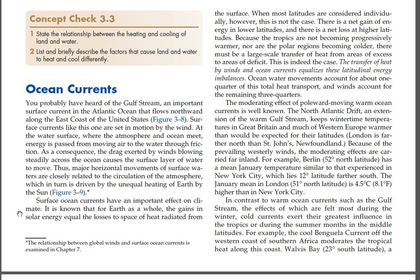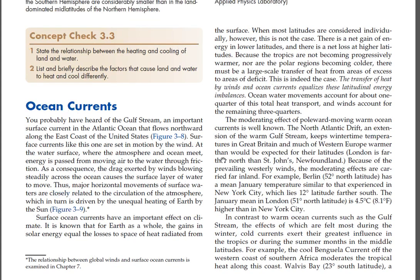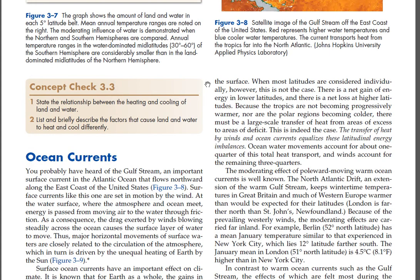It is known that for Earth as a whole, the gains in solar energy equal the losses to space of heat radiated from the surface. When most latitudes are considered individually, however, this is not the case. There is a net gain of energy in lower latitudes and a net loss at higher latitudes. Because the tropics are not becoming progressively warmer, nor are the polar regions becoming colder, there must be a large-scale transfer of heat from areas of excess to areas of deficit. The transfer of heat by winds and ocean currents equalizes these latitudinal energy imbalances. Ocean water movements account for about one-quarter of this total heat transport, and winds account for the remaining three-quarters.